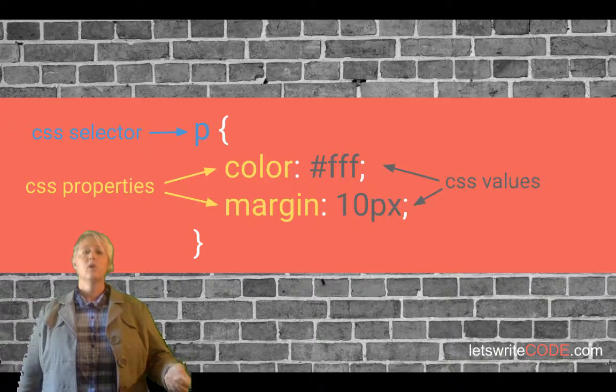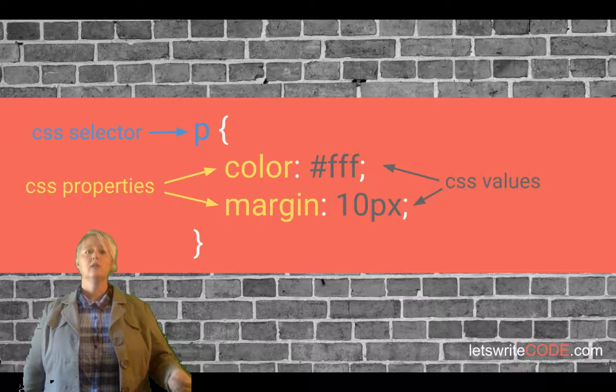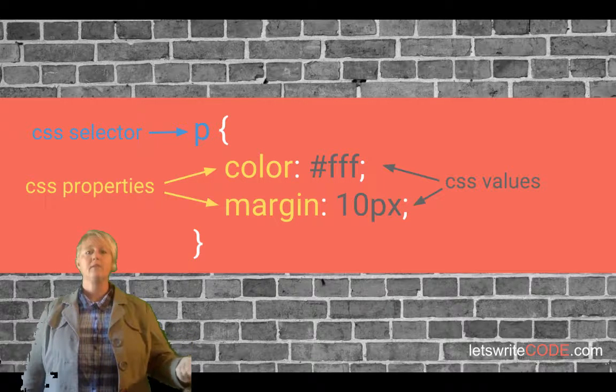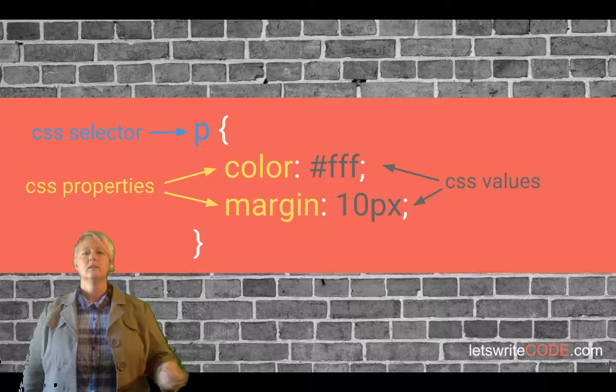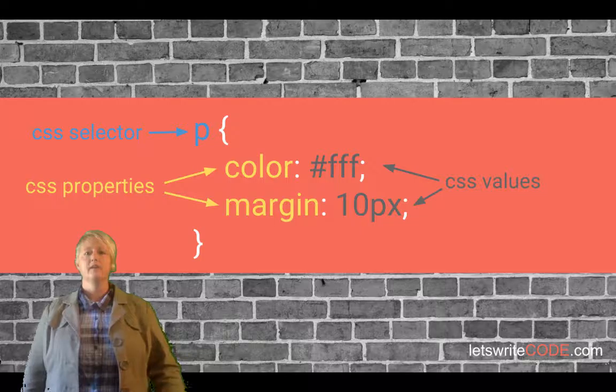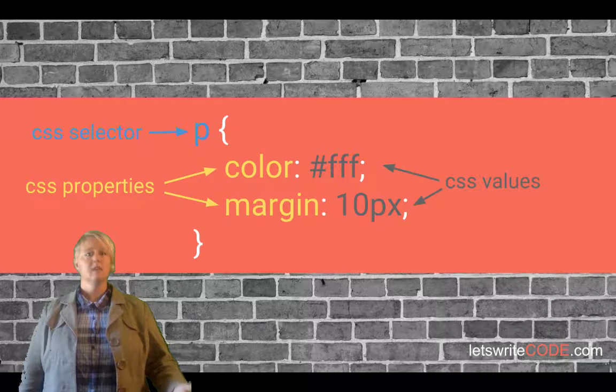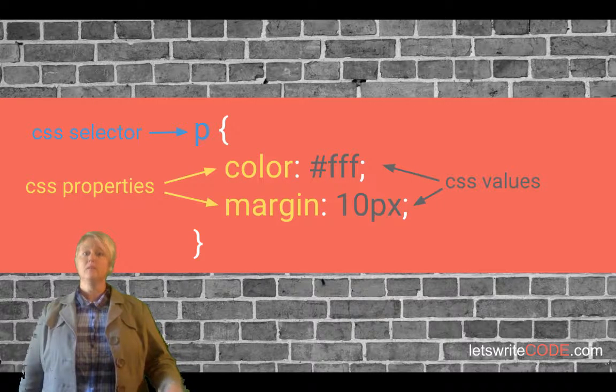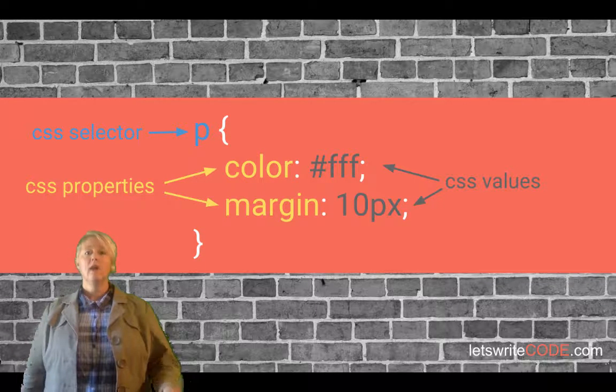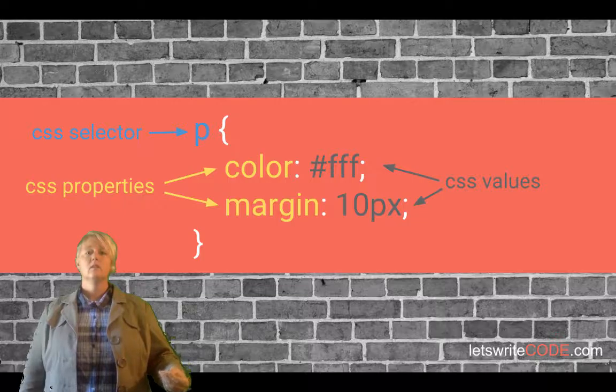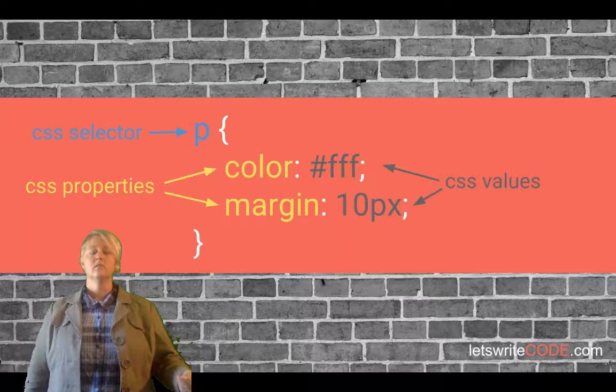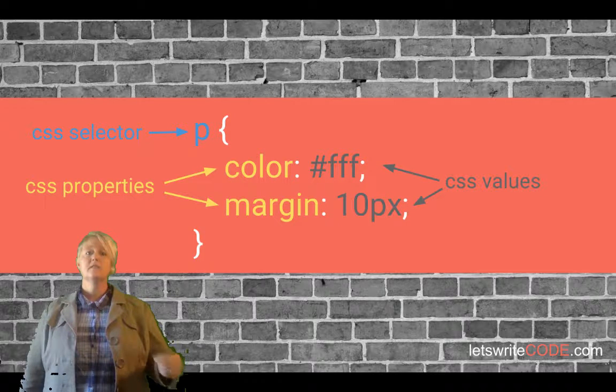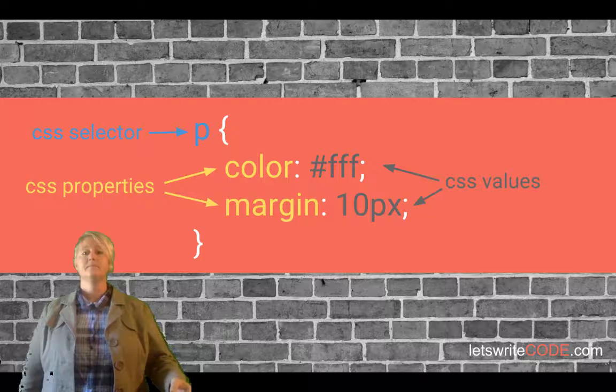Here, for all paragraphs, we're saying that the property color should be set to the hexadecimal value FFF, and we're saying that all paragraphs should have a margin of 10 pixels. Now, there are a number of different ways that these values can be defined. Color can be defined using hexadecimal values as well as RGB values. Margins can be defined using pixels, percentages, or ems. That's for a more advanced video. For now, what you should recognize is that we would select an element with a CSS selector, and then inside the curly braces, we would identify at least one CSS property. And for each of the CSS properties that we identify, we assign it a specific value.